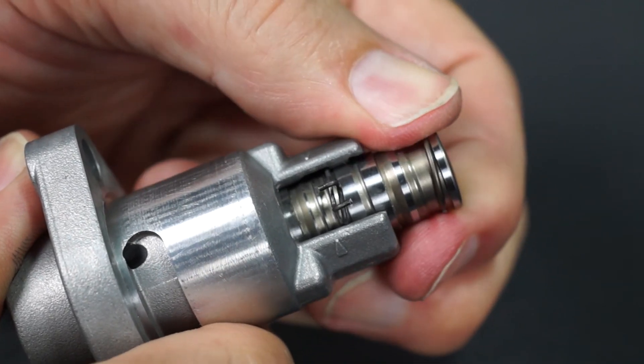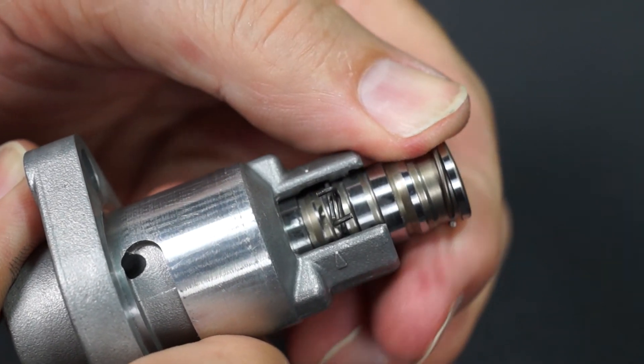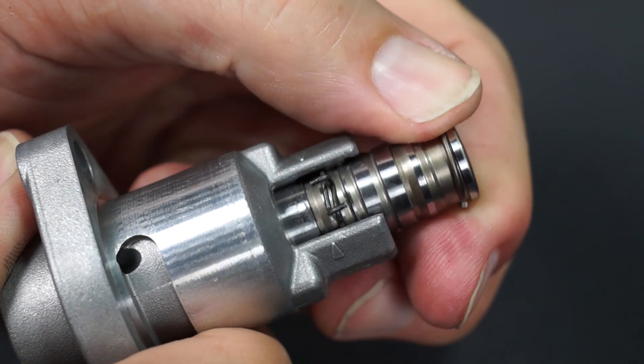As the timing chain wears, the clip is forced into the next groove as the tensioner rod extends further out to compensate for chain wear.